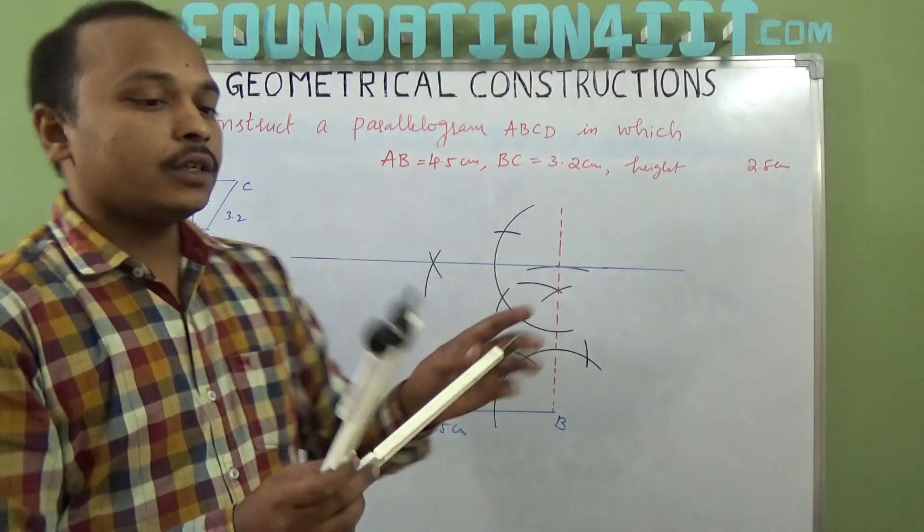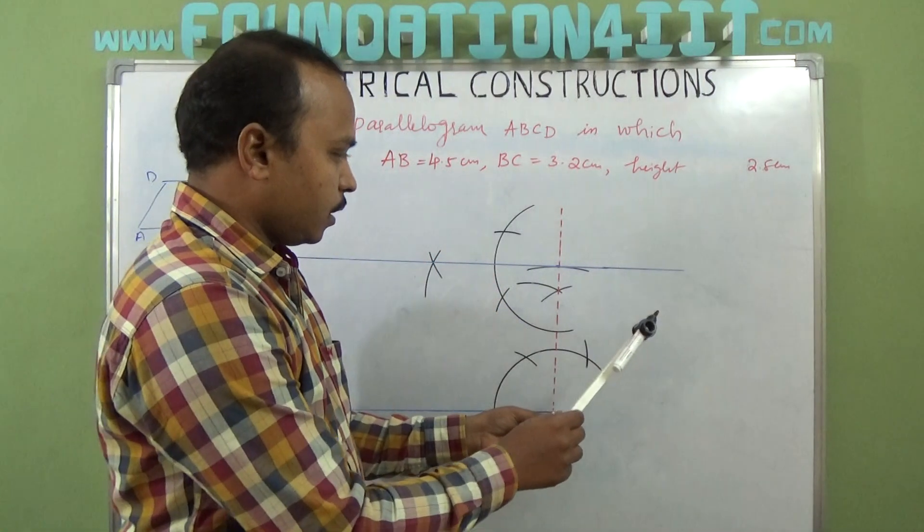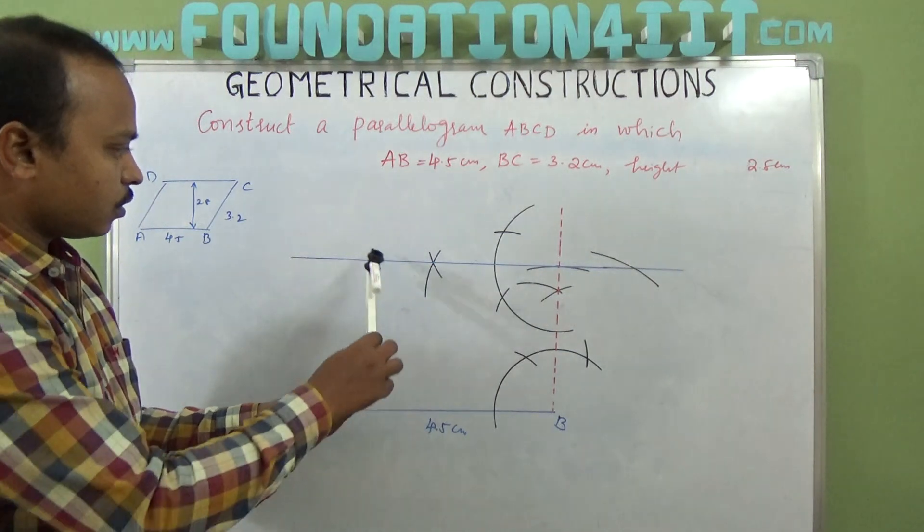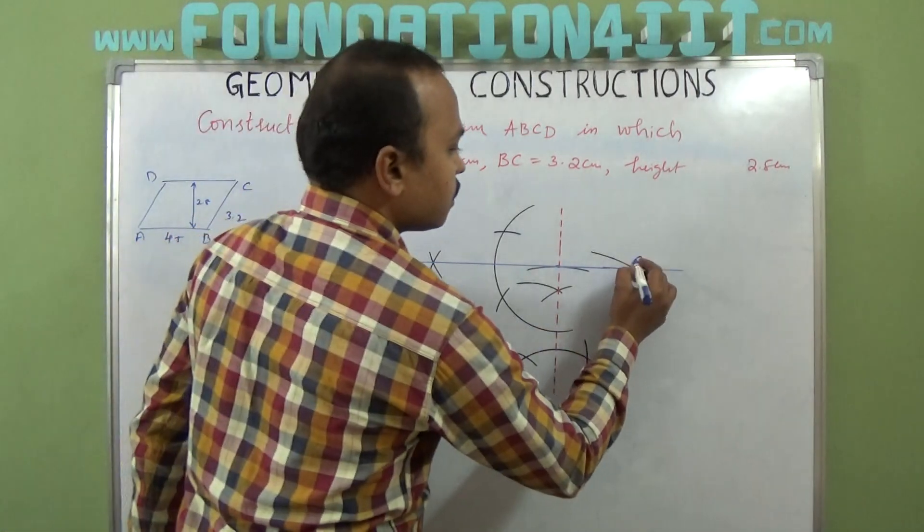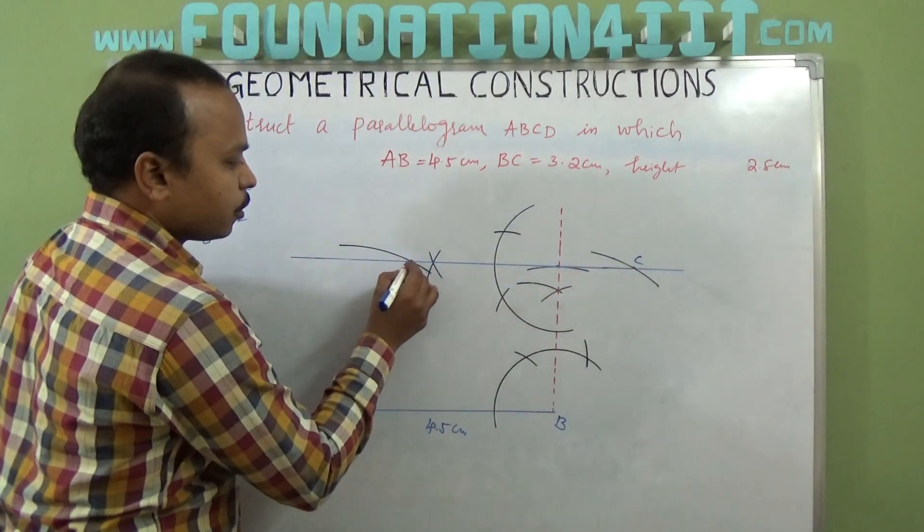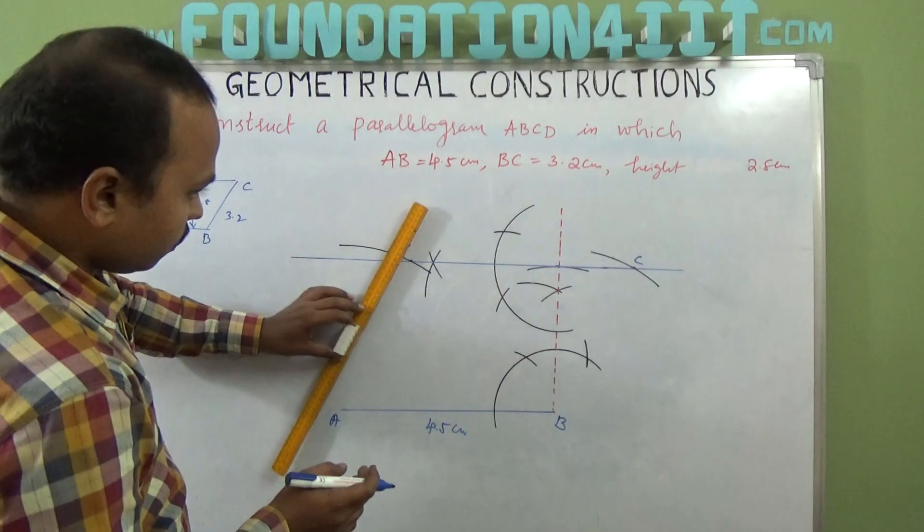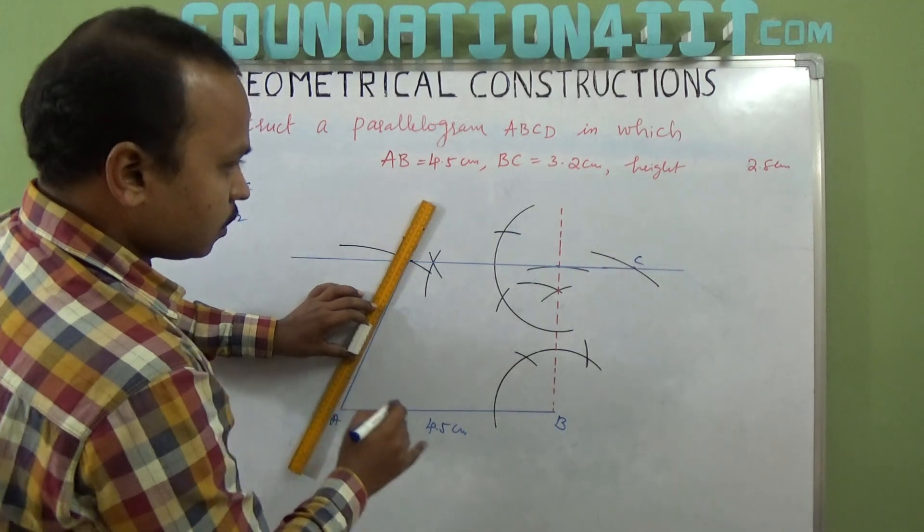B to C should be 3.2 centimeters radius, and from B you can cut this arc. Again, from A also, cut this arc. It will join at a point. This is C and this point is D. Then join AD as well as BC also.